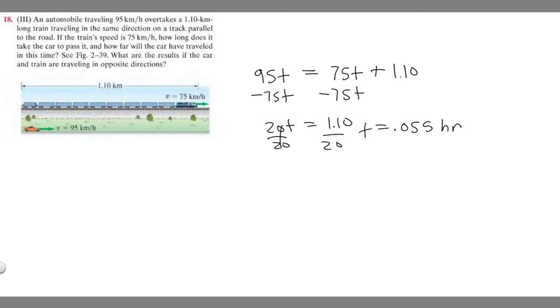If the car is going 95 kilometers per hour and we know how many hours it's going, all we've got to do is take its speed and multiply it by the number of hours. So 95 kilometers per hour times 0.055 hours. 95 times 0.055 gives you 5.225.